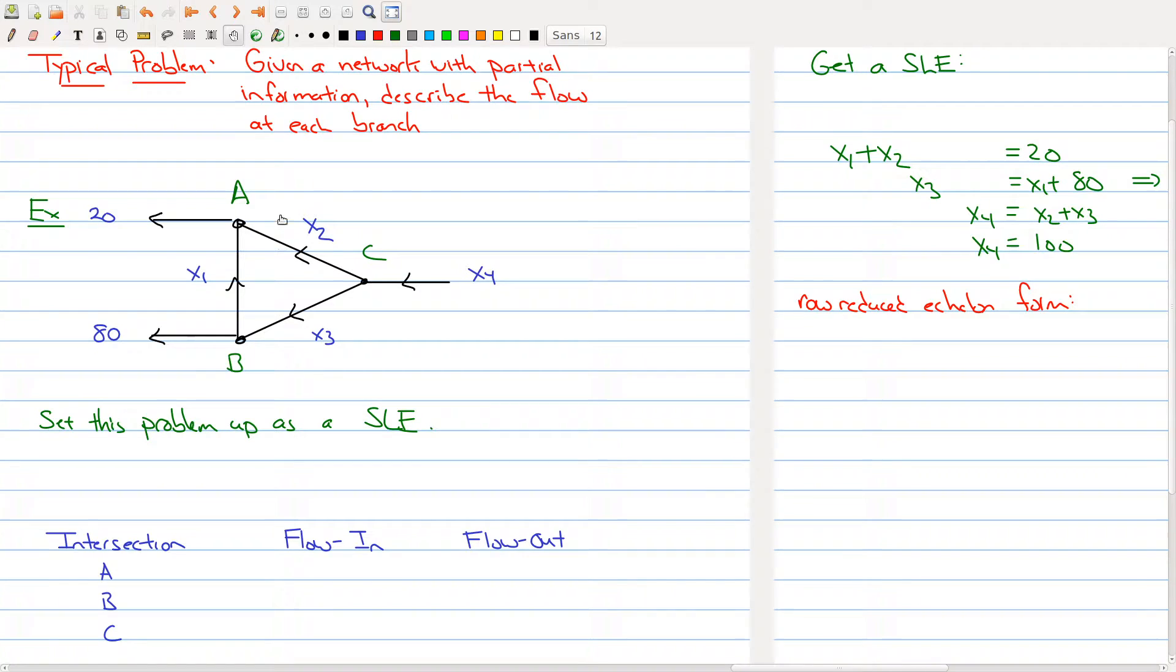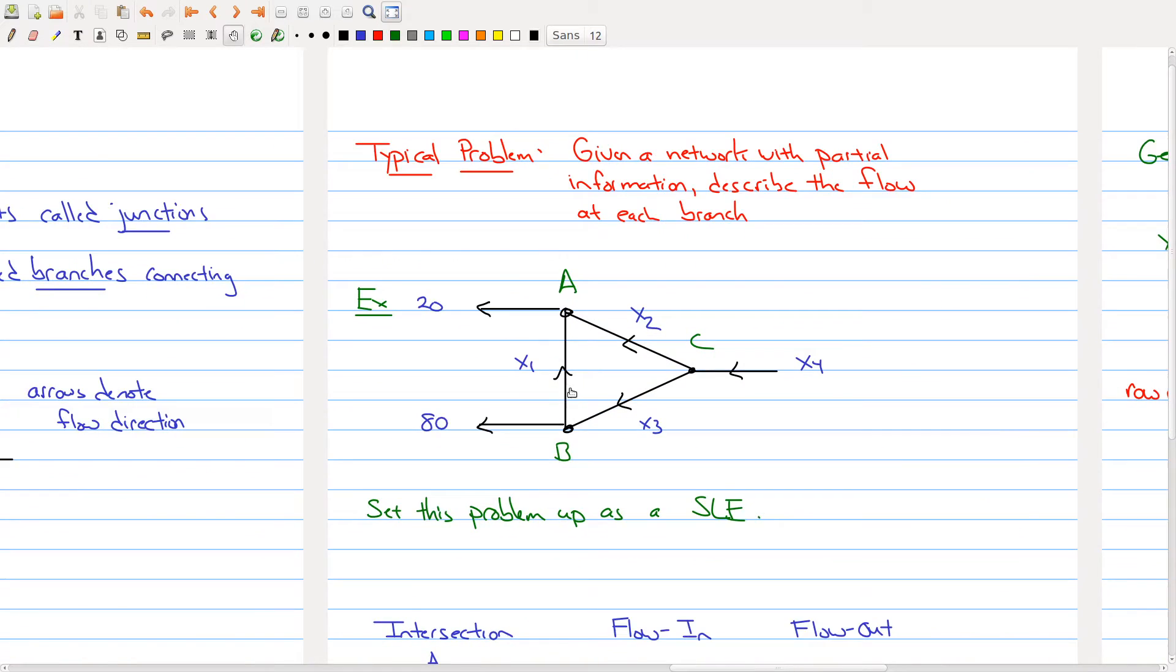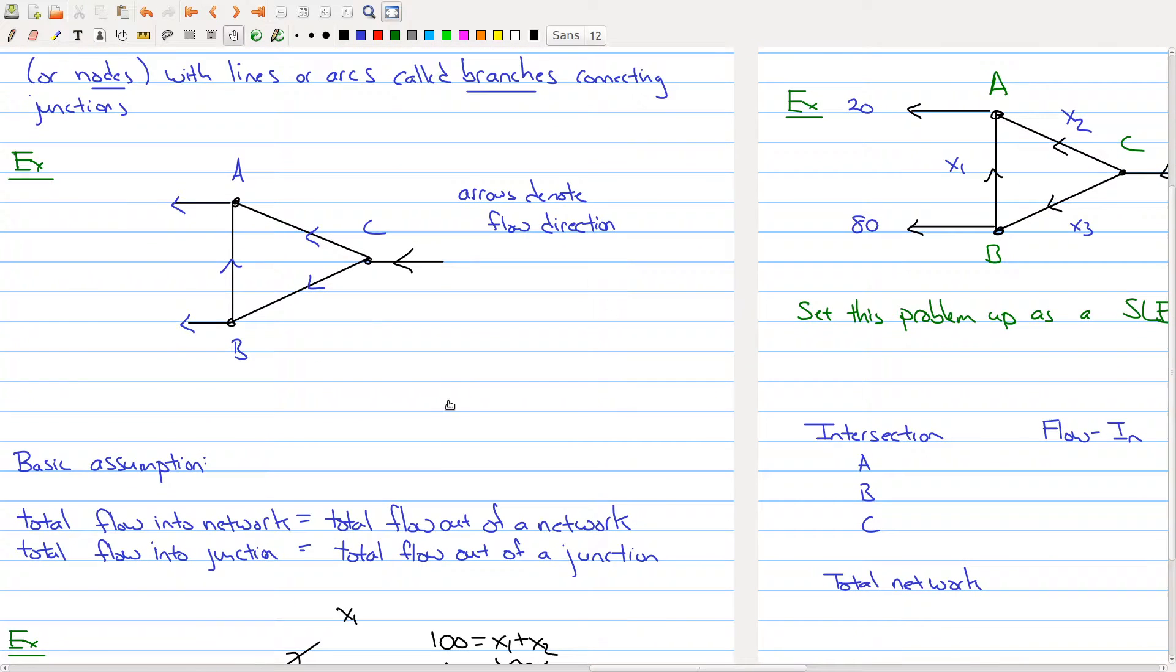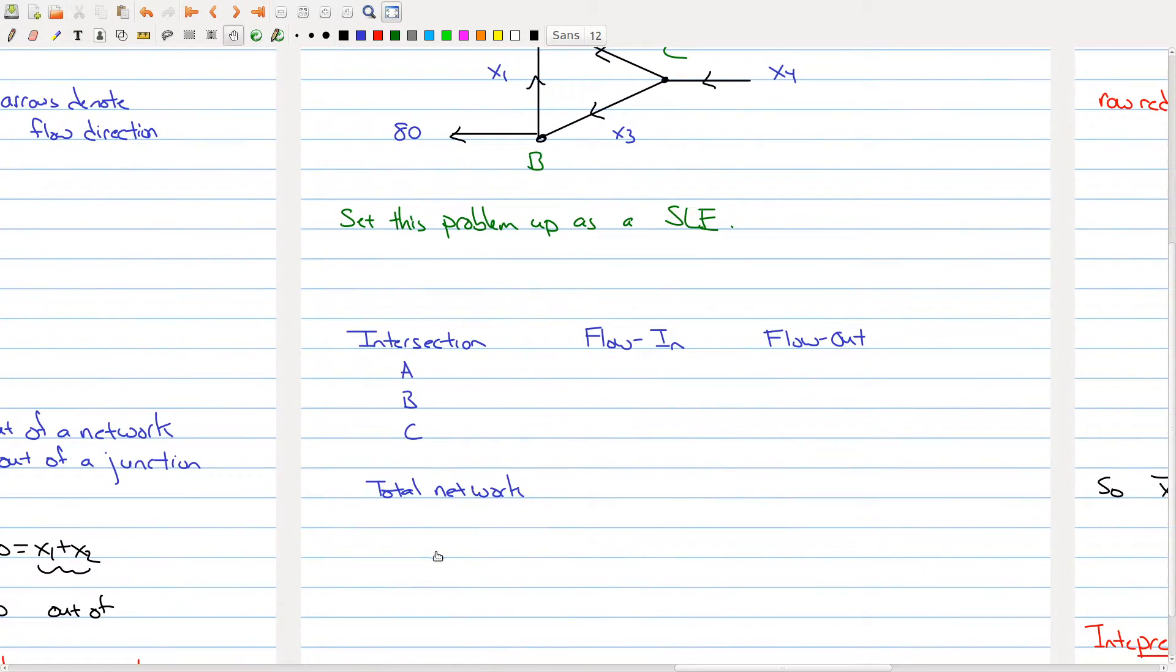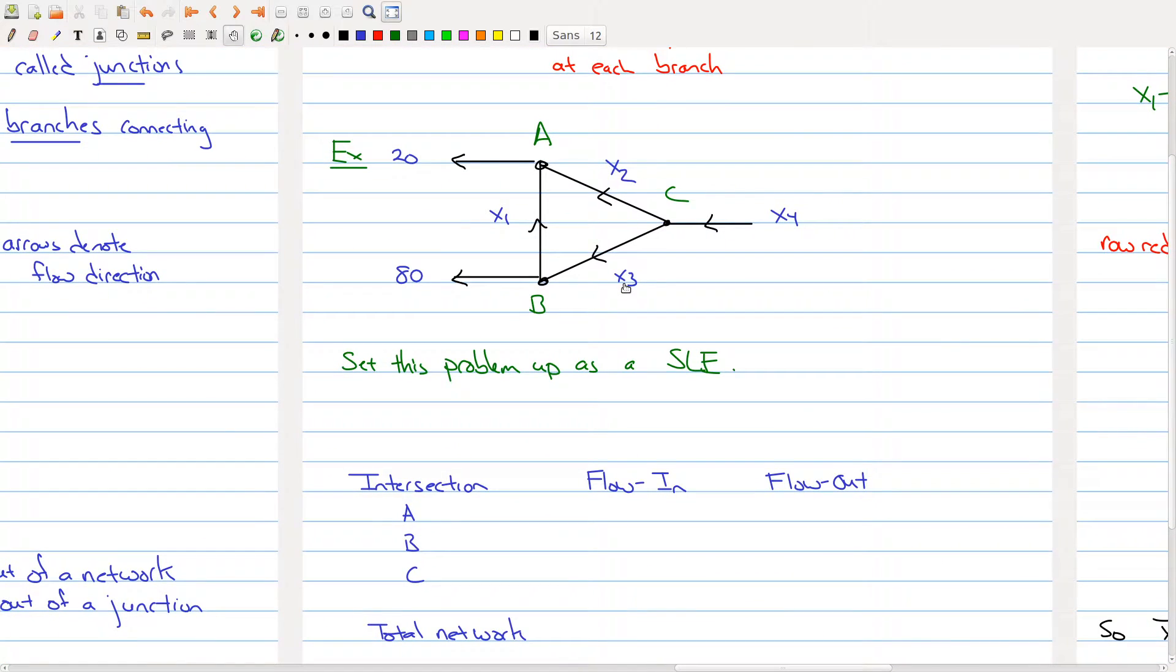What we're going to do is make use of the fact that we have some basic assumptions: total flow into the network equals total flow out, and total flow into a junction equals total flow out of a junction. We want to take this network and use this to write a bunch of linear equations.